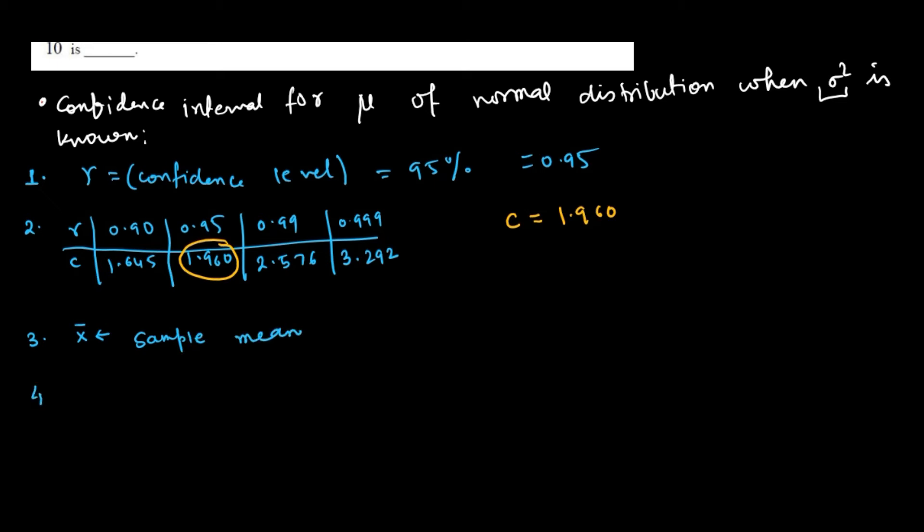And the fourth step is find out k, which is c sigma by square root n. So here it is 1.960 times sigma, because we are going to square it.